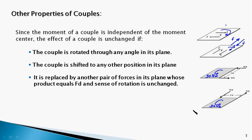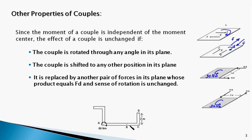Let's take another example. In this body, a couple of moment 80 Newton-meters acts in clockwise direction at point A. Suppose you are asked to shift the couple to act at point B — the answer is yes. You can simply shift the couple to that location without altering the effect, because the couple still rotates the body about an axis perpendicular to the plane of the body.